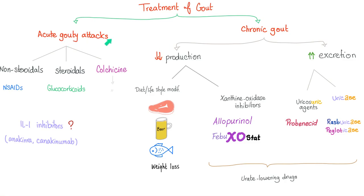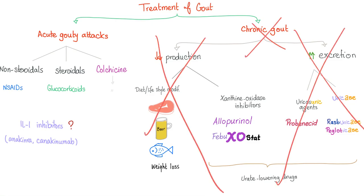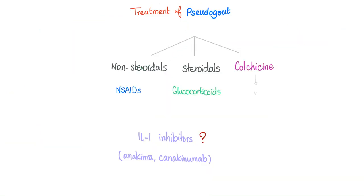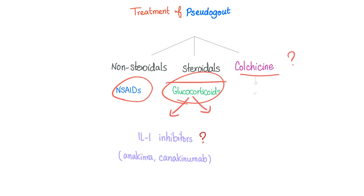Treatment of pseudogout: for the acute attack, use NSAIDs, steroids, and colchicine — though colchicine is not as effective as it is with gout. Glucocorticoids can be given locally or systemically. Interleukin-1 inhibitors such as anakinra may also work. There is no role for uric acid-lowering agents like allopurinol since uric acid is not involved. Don't forget to treat the underlying cause, such as hemochromatosis or primary hyperparathyroidism.